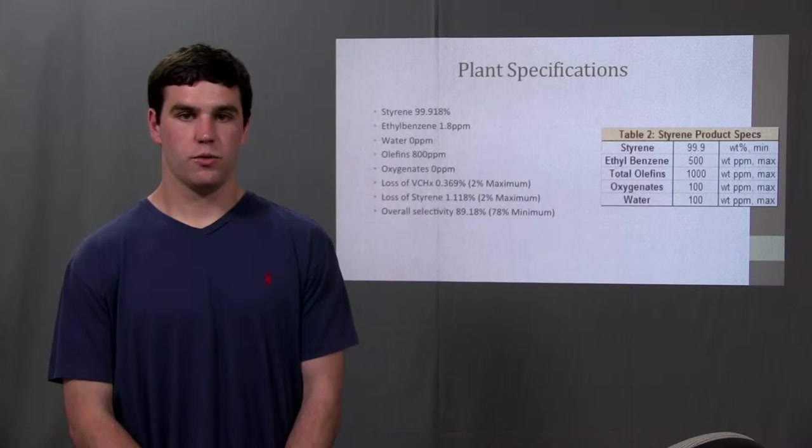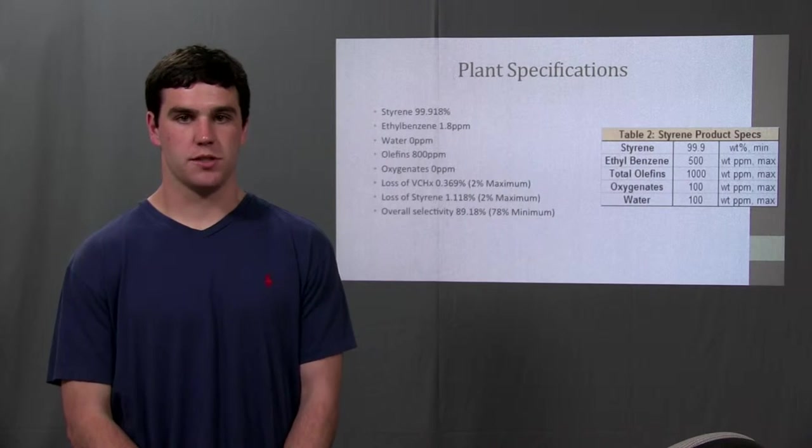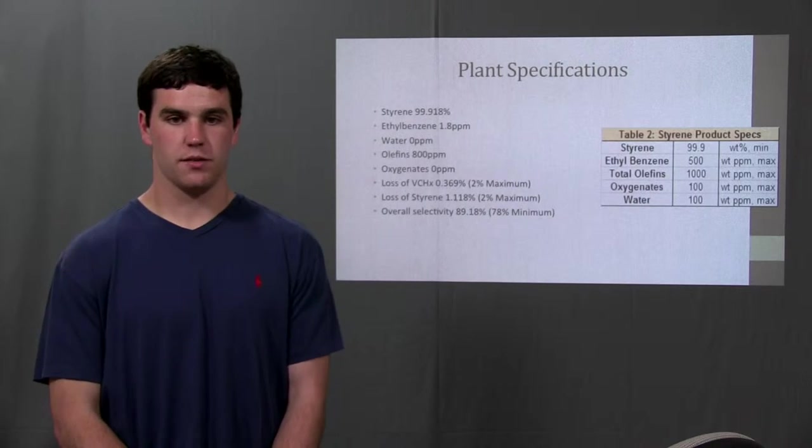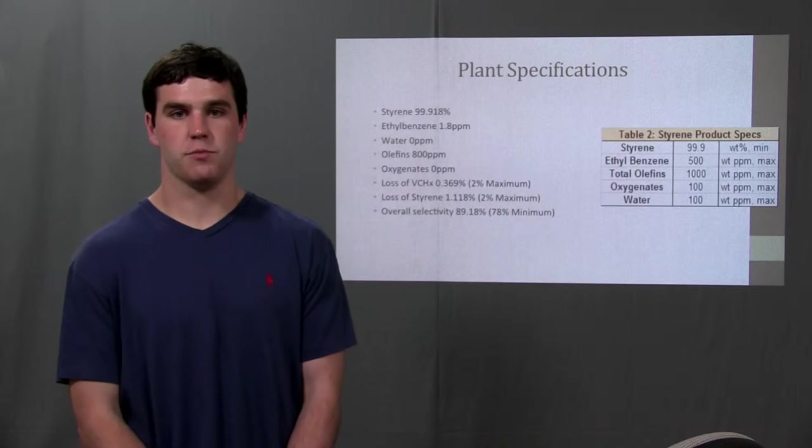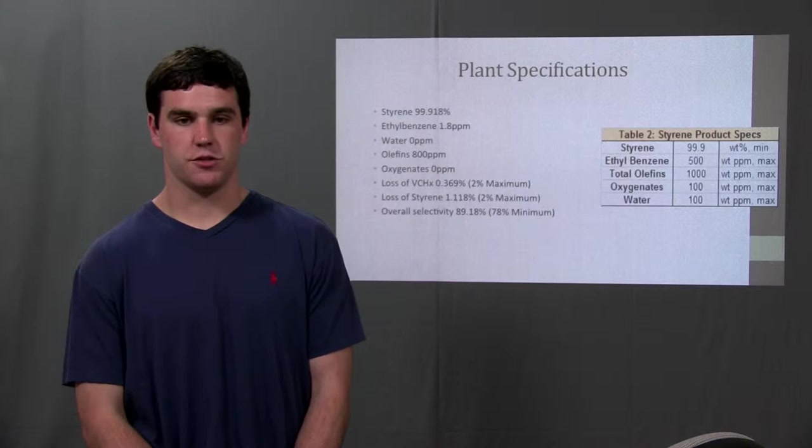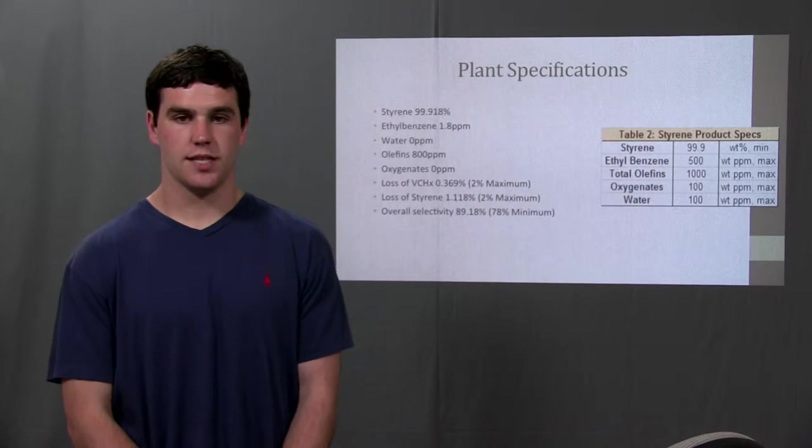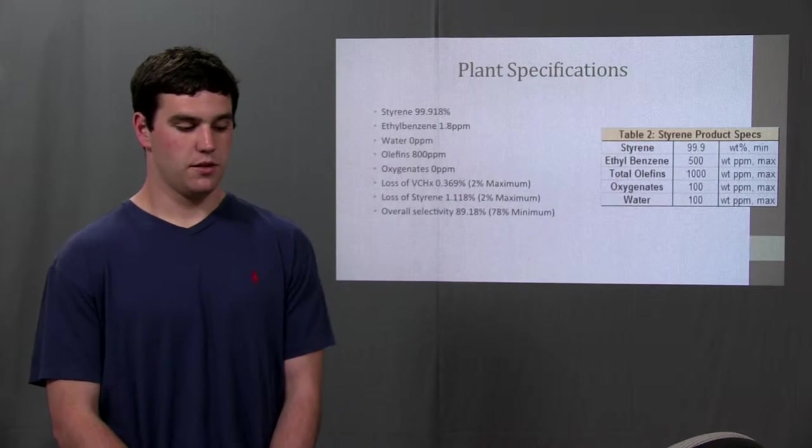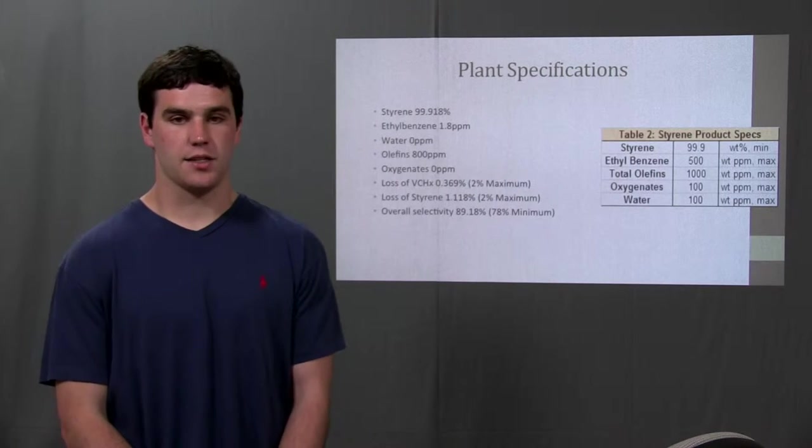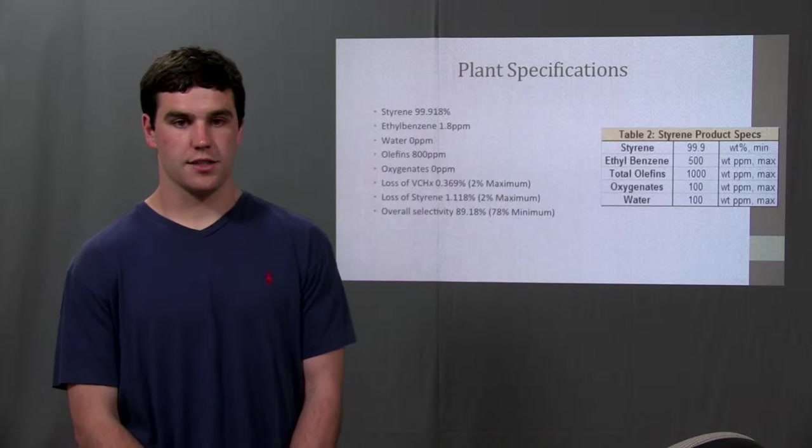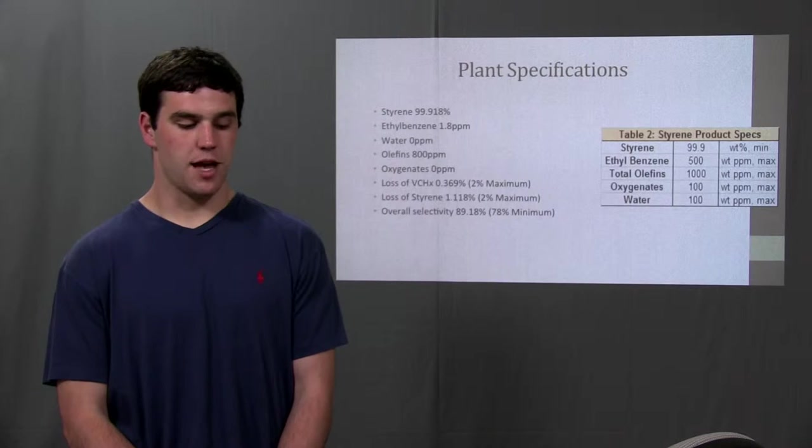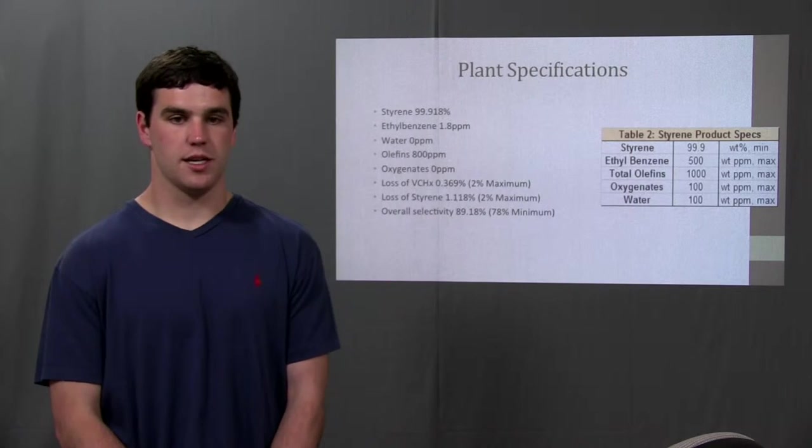Waste from the plant was sent to multiple options. A flare was used for the gases and liquid waste streams were sent to proper treatment and then disposed of properly. Water was sent to sewage treatment plant as the only contaminant present was CO2. The overall design process consisted of a VCHX reactor, an oxy-dehydrate reactor, four distillation columns, and a settler. Josh will now discuss the block flow diagram and go into more detail about the process.